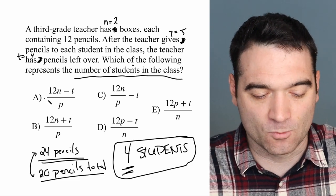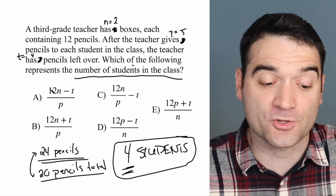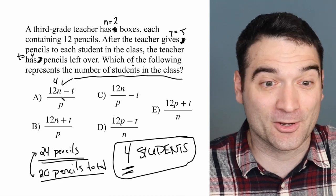All right, so 12 times 2, we'll start with A. 12 times 2 is 24, minus T equals 4, so 20 divided by 5 is 4. Well, that looks pretty darn good to me.